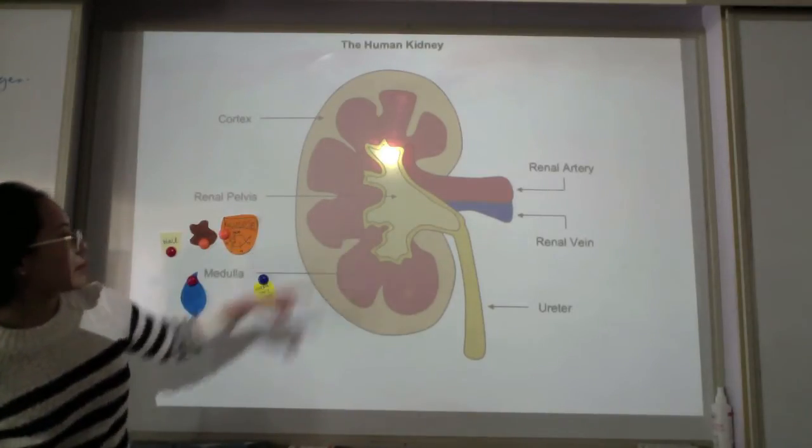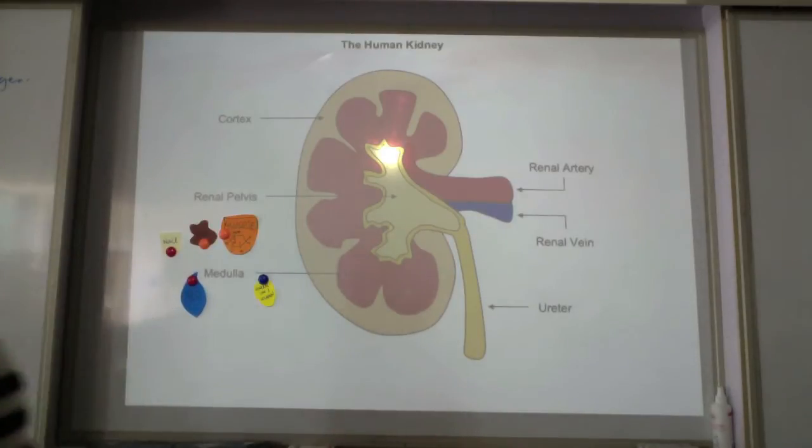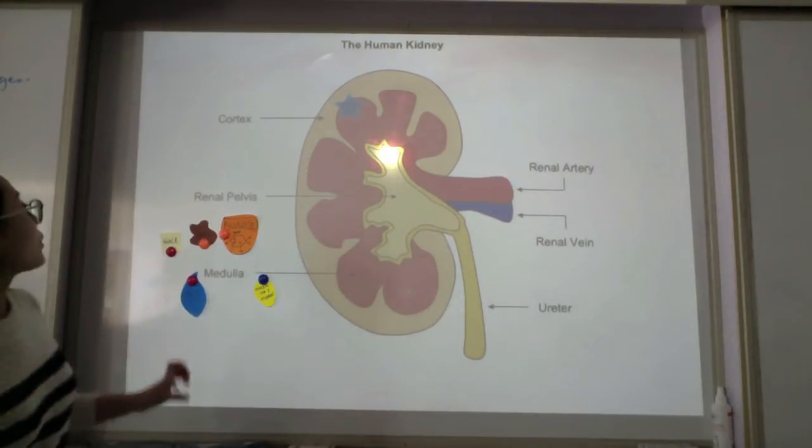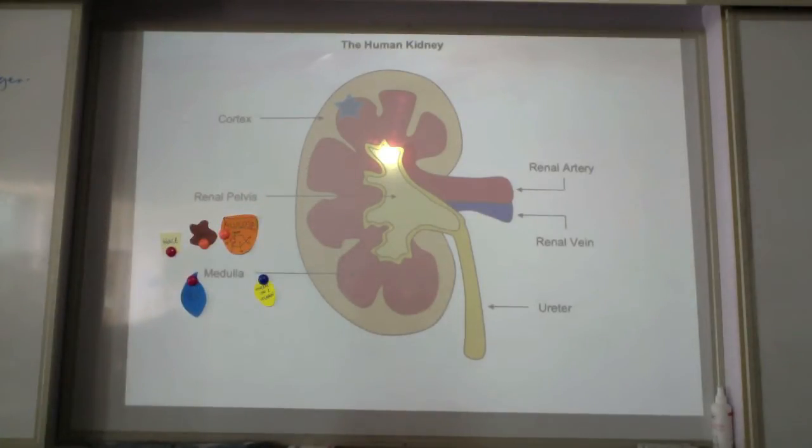and then the renal pelvis. So what we're going to talk about is the nephron which is around here on the outer between the cortex and the medulla and the nephron is the functional unit of the kidney.